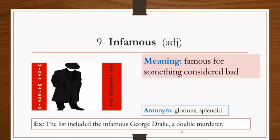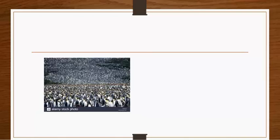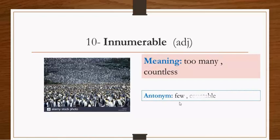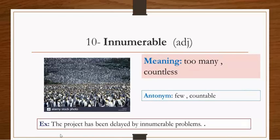Number ten. From this picture you see numerous people, countless people that are hard to count, like hair is difficult to be counted. This is called innumerable. Innumerable is an adjective meaning countless or too many. The opposite is few and countable. Example: The project has been delayed by innumerable problems, many problems.